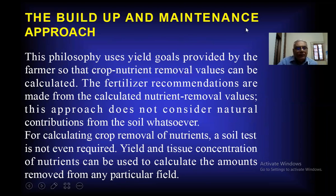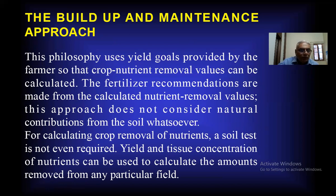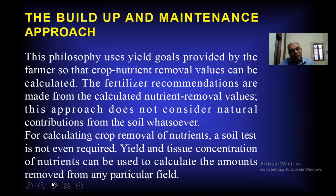The build-up and maintenance approach uses yield data provided by the farmer so that crop nutrient removal values can be calculated. The fertilizer recommendations are made from the calculated nutrient removal values. This approach does not consider natural contribution from the native soil. For calculating crop removal of nutrients, a soil test is not even required — tissue concentration of nutrients can be used to calculate the amount removed from any particular field.